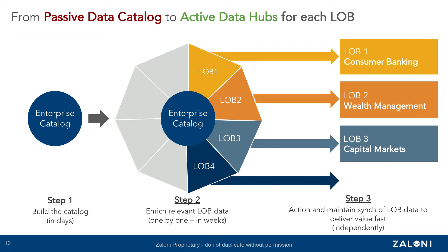In step two, different lines of business may be provided access to the full catalog, or perhaps there are workspaces or projects created within the catalog so that users from a specific department can focus only on the data sets that are important or relevant to them. For example, if it's a financial services company focused on consumer banking first, they would begin by cataloging those data sets, prove out and add the required business and operational metadata, and then add additional lines of business like retail or investment banking once they're happy with the initial results.